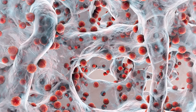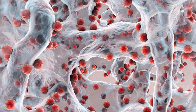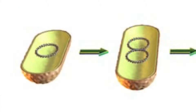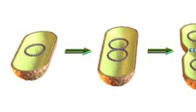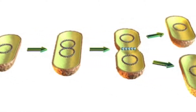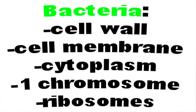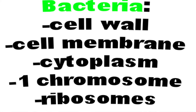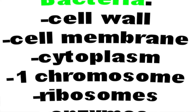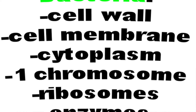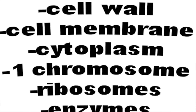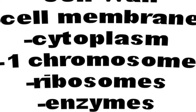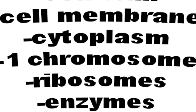Bacteria, however, are living, and like living organisms, they eat and they grow. They reproduce by fission, which is an asexual form of reproduction. Because bacteria are living, they have a cell wall, cell membrane, cytoplasm, a single chromosome, and they have ribosomes and enzymes to break down food and build cell parts.